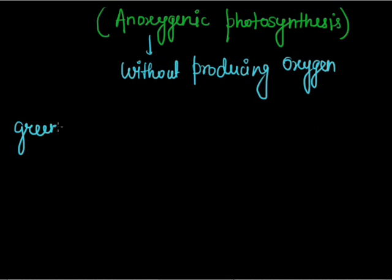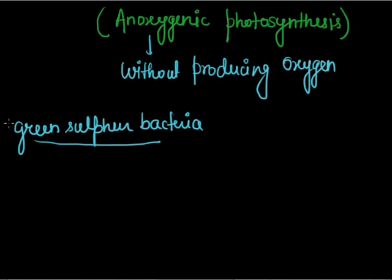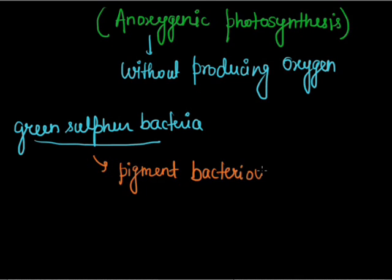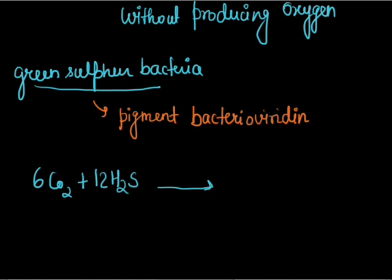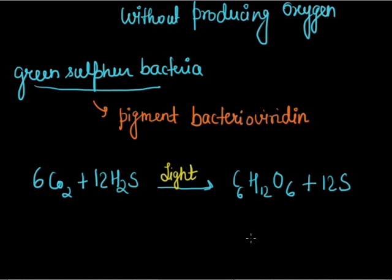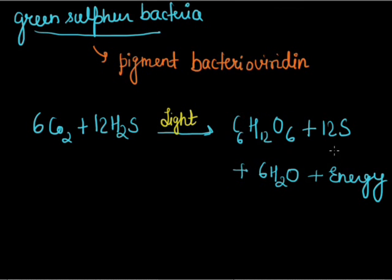There is green sulphur bacteria. It utilizes a pigment called bacterioviridine, which is similar to chlorophyll, and thrives well in illuminated environments. This bacteria produces elemental sulphur. The reaction is: 6 CO₂ + 12 H₂S (with light energy) → C₆H₁₂O₆ (glucose) + 12 S + 6 H₂O + energy. So this bacteria produces elemental sulphur by removing hydrogen from hydrogen sulphide.